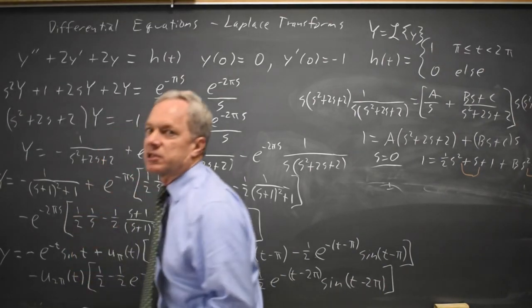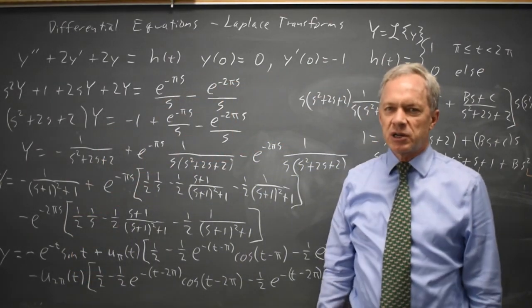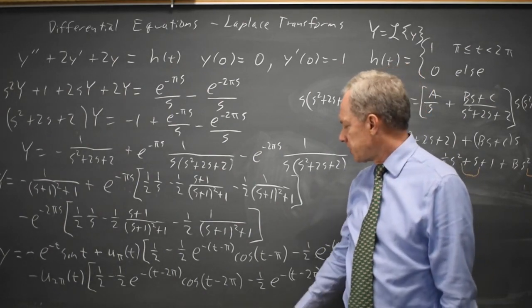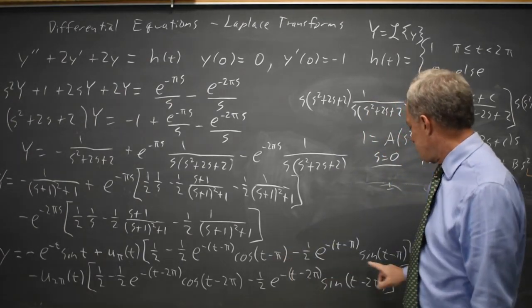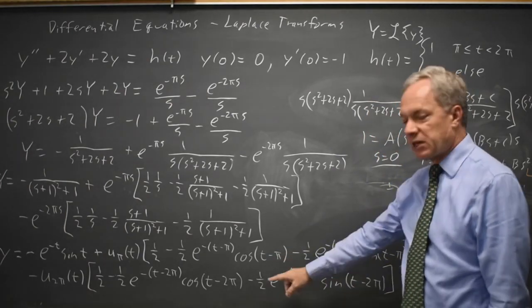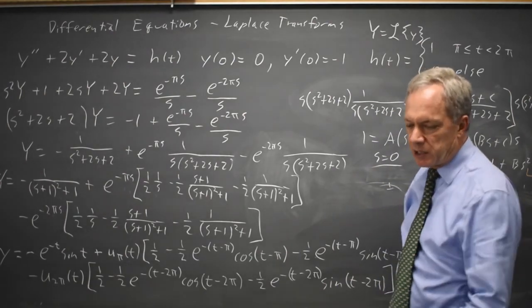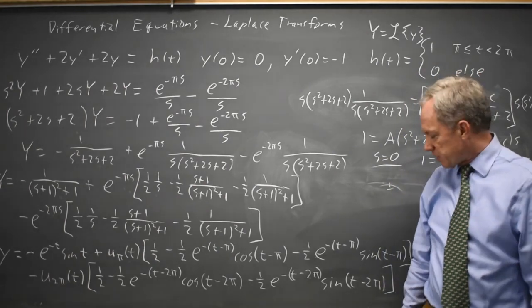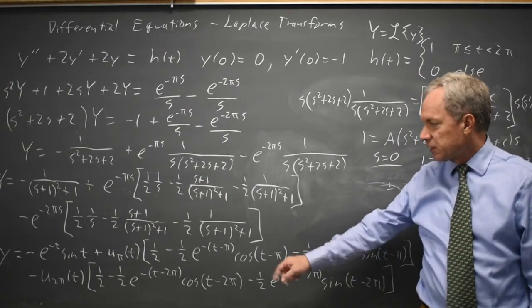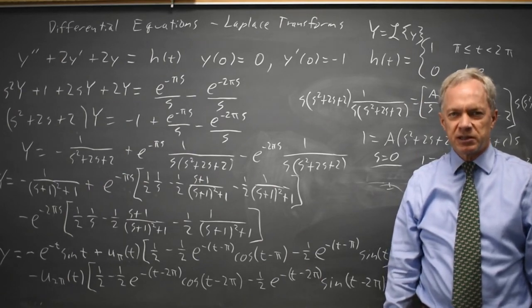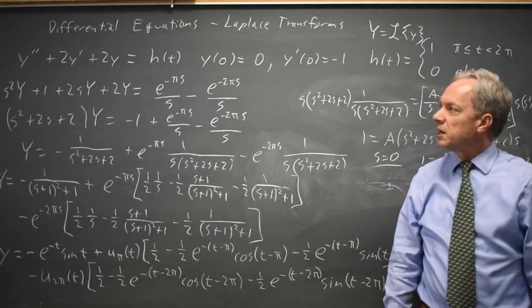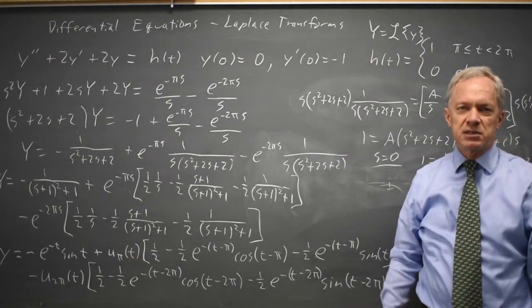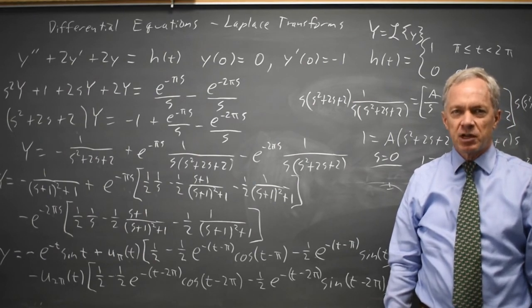You'll have to decide for yourself, based on your own preferences and your professor's expressed preferences, whether you want to use trig identities to simplify cosine(t minus pi), sine(t minus pi), and the same for t minus 2pi. In many cases it's easier, or more clear and intuitive, to leave them as sine(t minus 2pi) when you're multiplying by u_{2pi}. This gives us the solution of a differential equation with a piecewise non-homogeneous term. Come back soon for my next video on differential equations — there's always more.